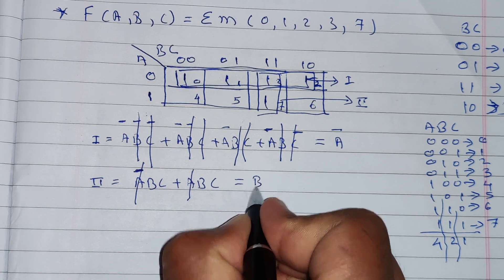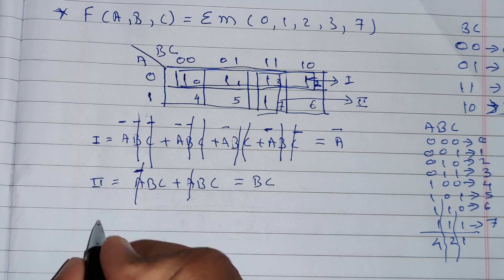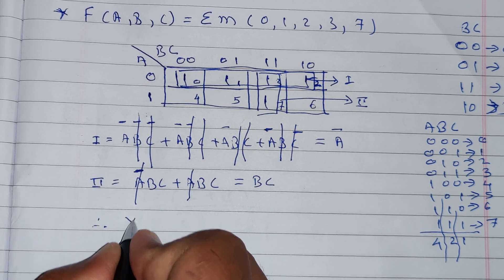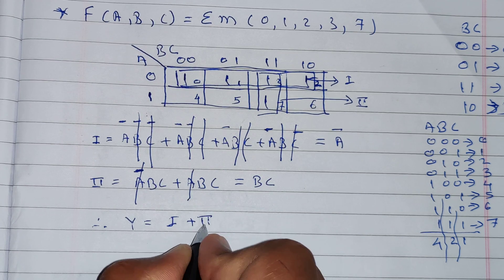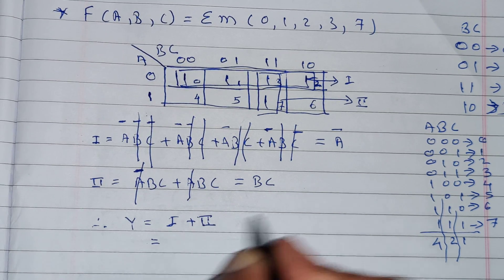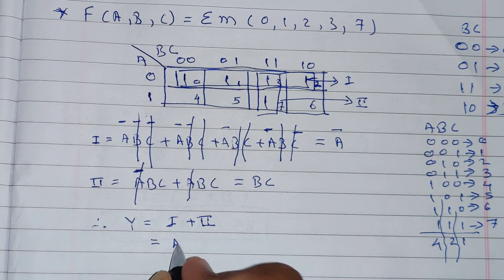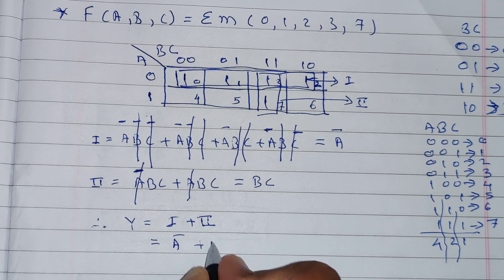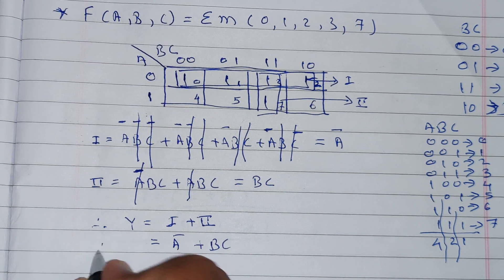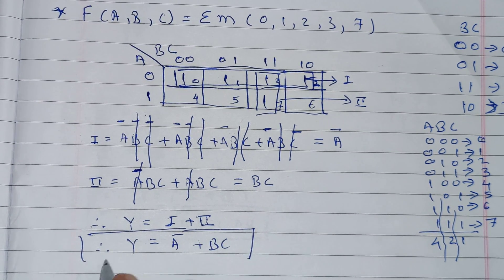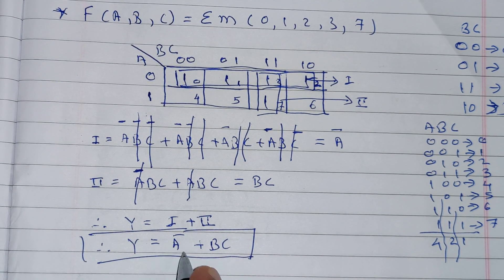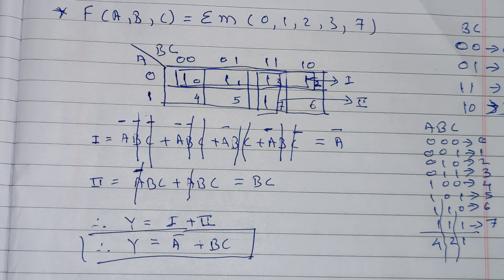The final solution is the sum of all groups. From Group 1 we got A̅, and from Group 2 we got BC. Therefore, Y = A̅ + BC. This is the solution to our three variable Kmap problem.